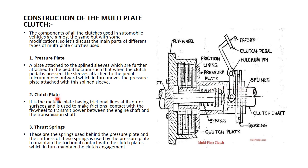Clutch plate: it is a metallic plate having frictional lining at its outer surface and is used to make frictional contact with the flywheel to transmit power between the engine shaft and the transmission shaft. The clutch shaft is also called the transmission shaft. The flywheel shaft is the shaft attached with the engine. Power and torque are transmitted from this shaft to that shaft.